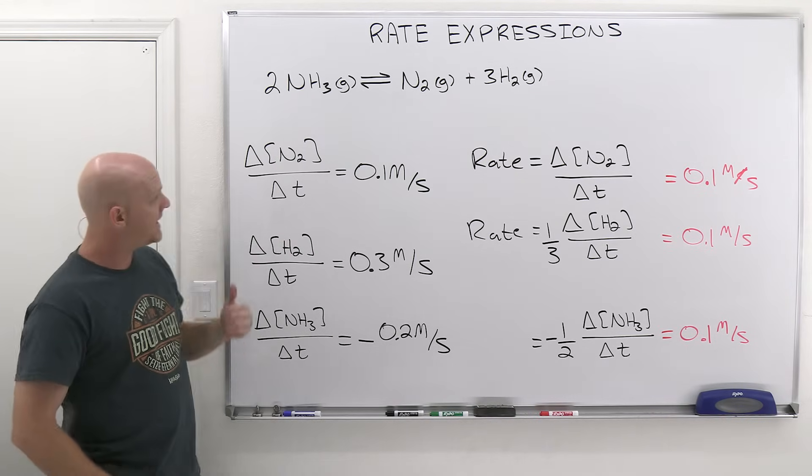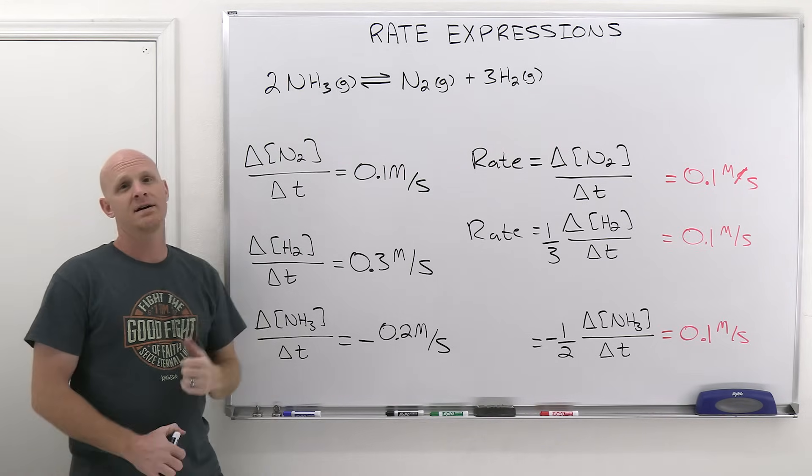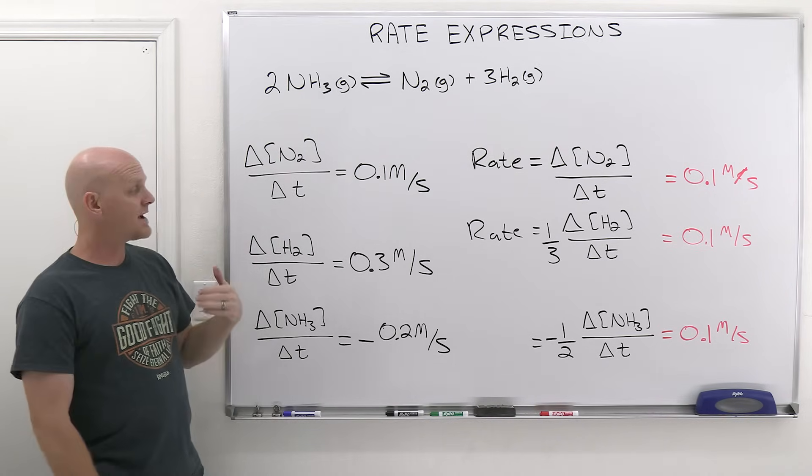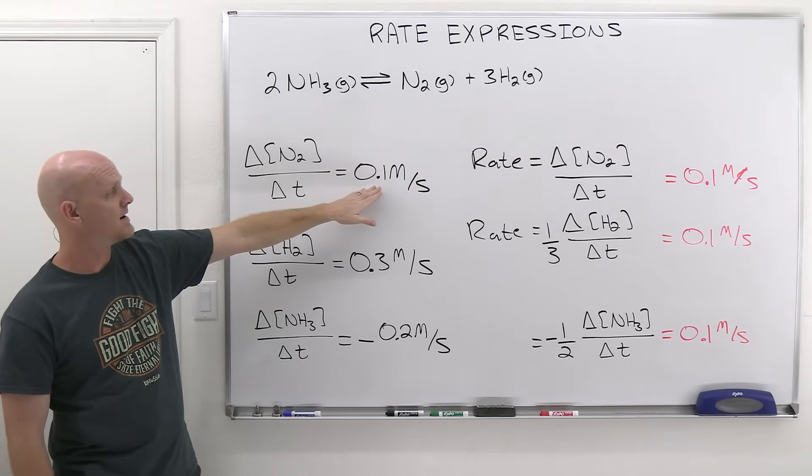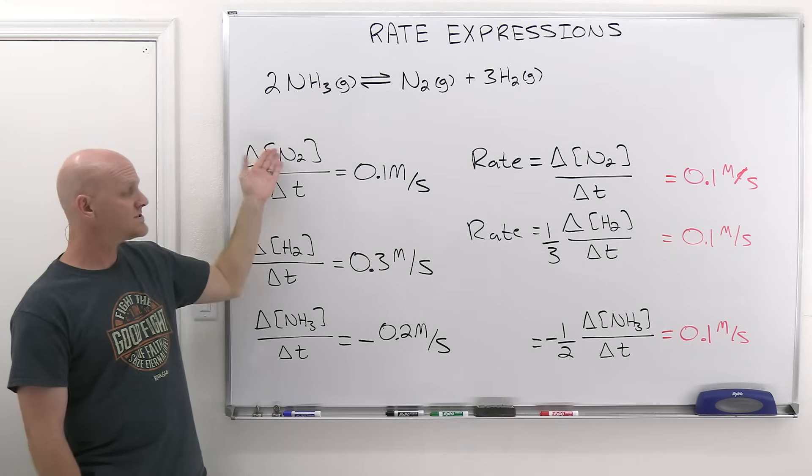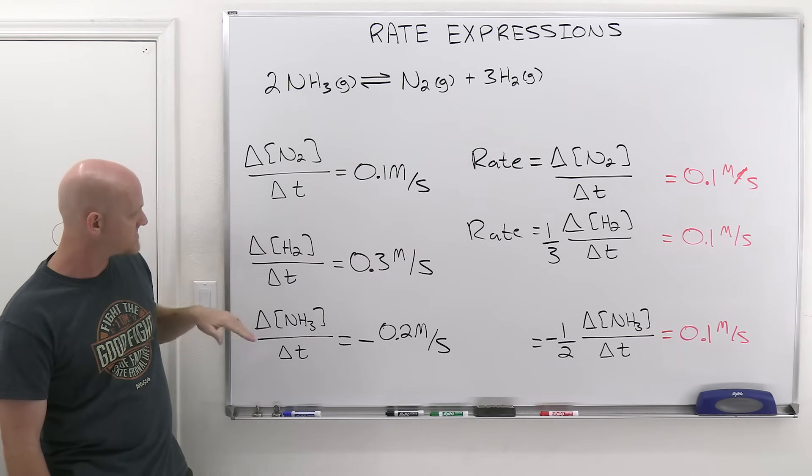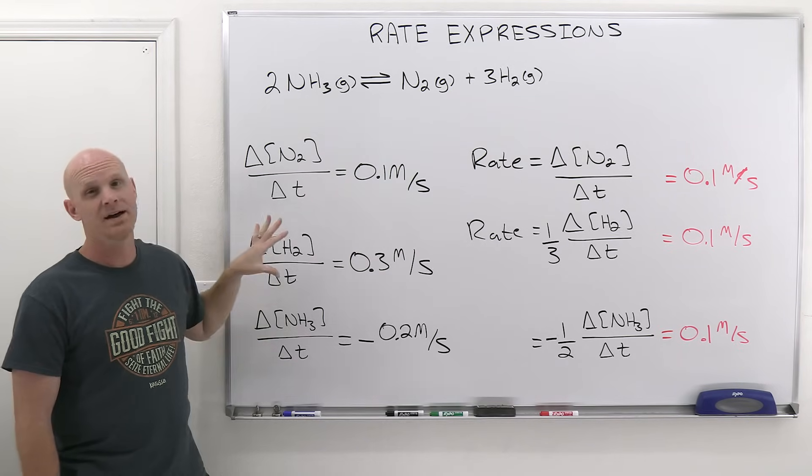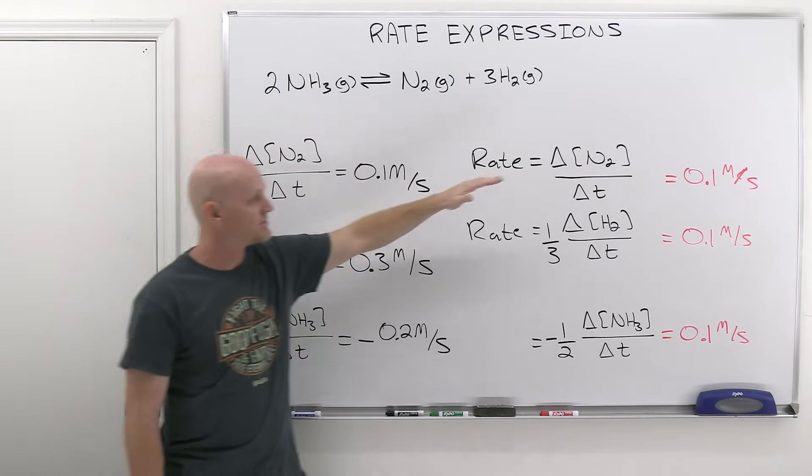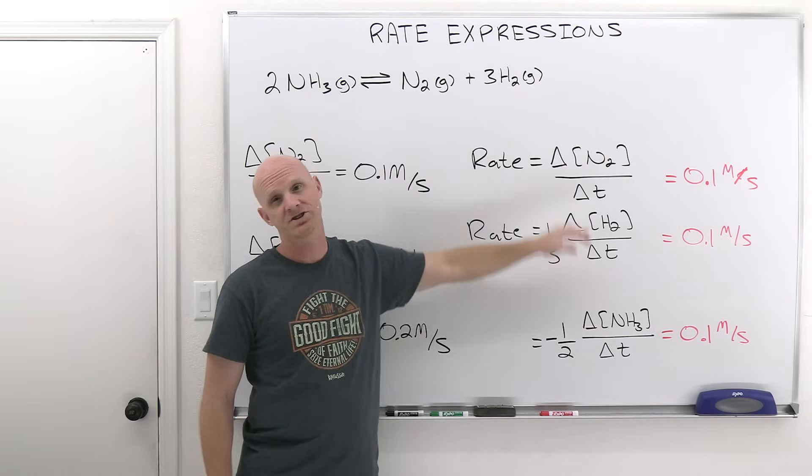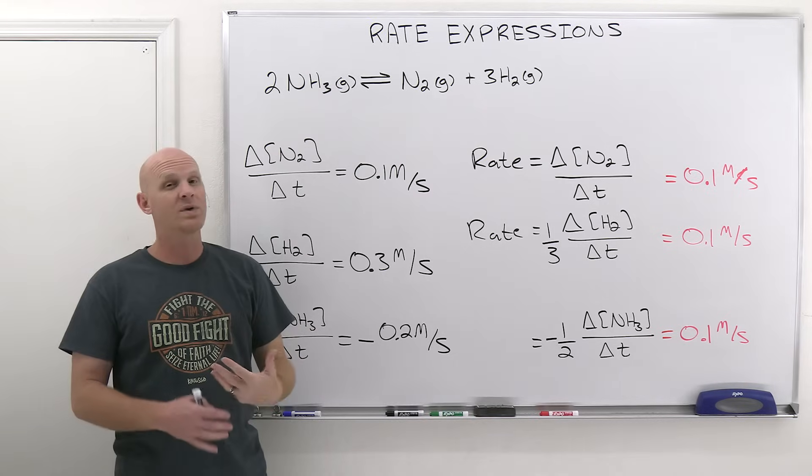So if you're given any individual reactant or product and you're given one of the rates, you should be able to find the others, like we did here. Here we took the 0.1 molar per second for N2 over time, and then we translated that and figured out what the change in H2 over time or change in NH3 over time would be as well. You should be able to determine any valid rate expression and find the overall rate of reaction.